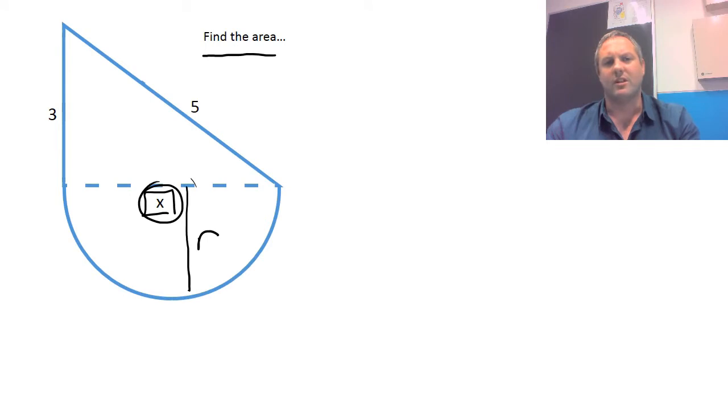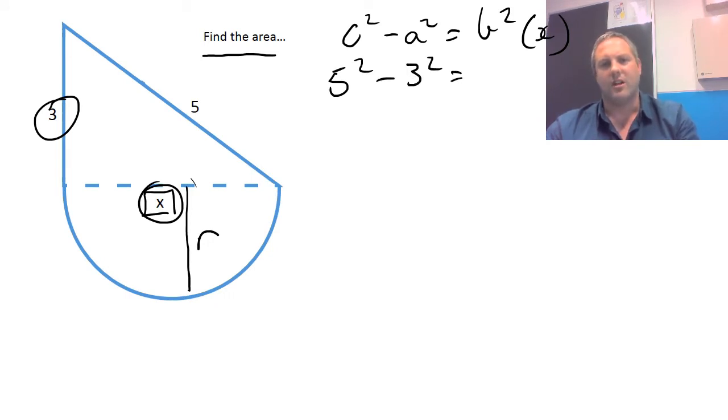So the first thing we need to do, and I'm just going to do our rule, so we've got C squared, because we know what C is, take away A squared, because we know A is over here, and that's going to equal B squared, which in this case is our X. So first thing, 5 squared minus 3 squared equals, and in this case, we're just going to write B squared here, and we write it, 25 minus 9 equals 16.